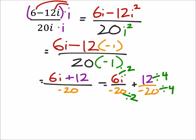So that would give me 3i over negative 10 plus 3 over 5. Oh, that's a negative 5, sorry.